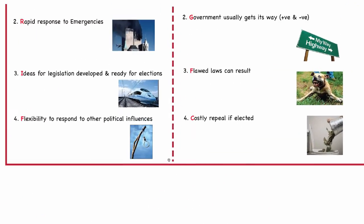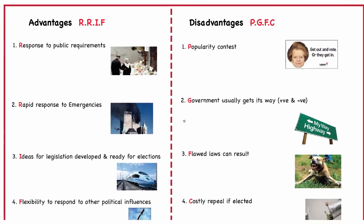Let's look at the advantages and disadvantages of political influence. The first advantage is that political parties can respond very clearly to public requirements. Following the tragic shooting in Dunblane, the public requirement was to have action taken about the use of handguns, and Parliament was very quick to respond to that public requirement because it was already in power. The second advantage is that there is a rapid response to emergencies. Because Parliament, government, and political parties are at the heart of the decision-making process, when something like 9-11 happens they can respond incredibly quickly.